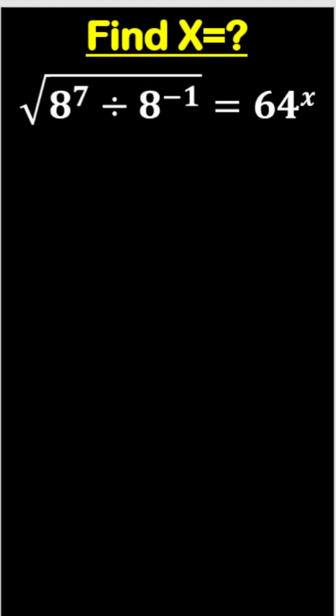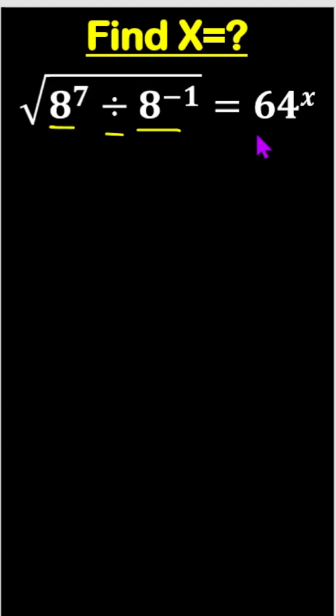Find x: square root of 8 to the power 7 divided by 8 to the power minus 1, equals 64 to the power x.